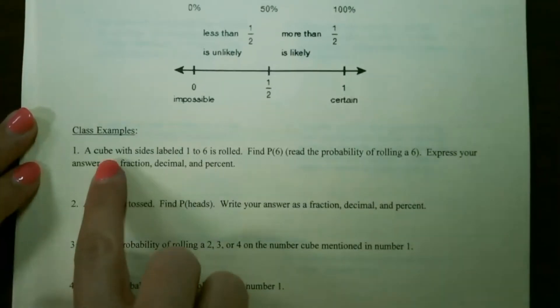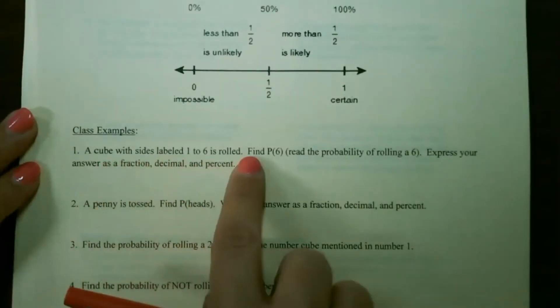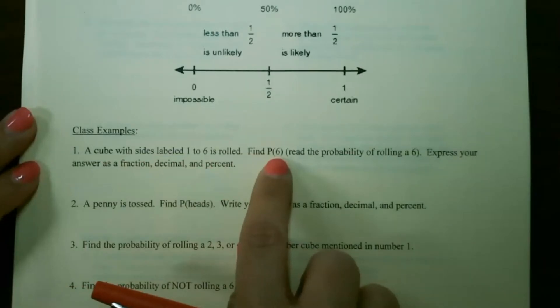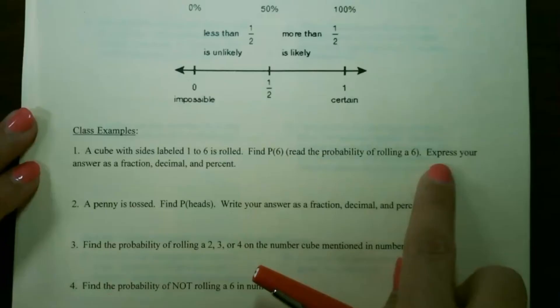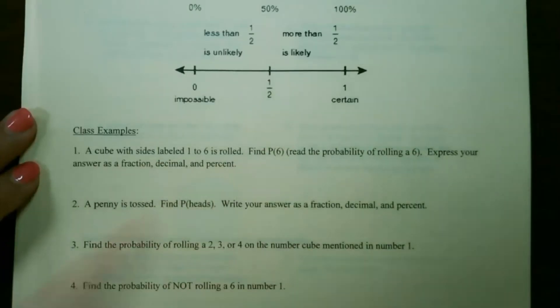Let's look at some examples. A cube with sides labeled 1 to 6 is rolled. Find the probability of rolling a 6 and express our answer as a fraction, decimal, and percent.